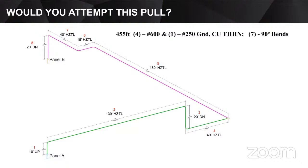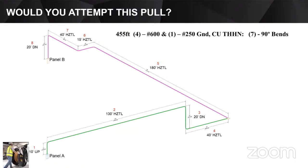Let's take a look at this pull. We have it drawn out in a 3D diagram. We're going to start in the bottom corner at Panel A — that's where we set up our wire. First we go vertically up out of the top of that panel, rising 10 feet into the ceiling of the building. Then in segment two, we travel horizontally 130 feet to a 90-degree elbow. This may be up in the truss or up in the steel, at the top of the building.